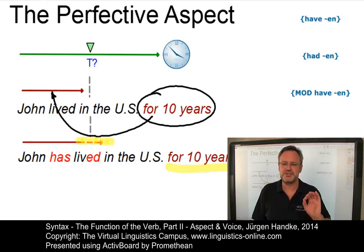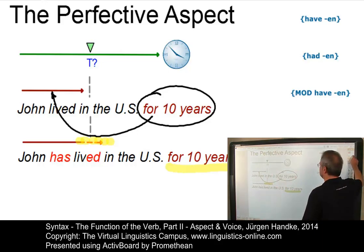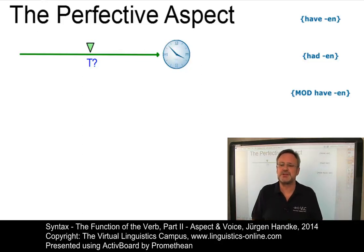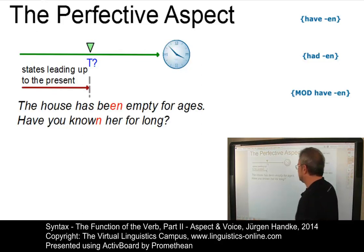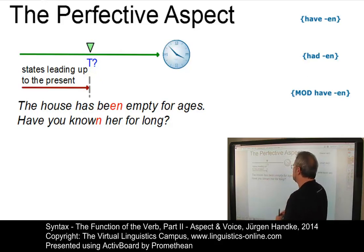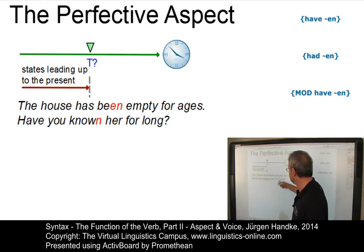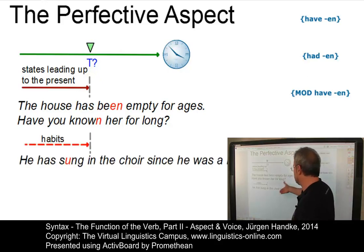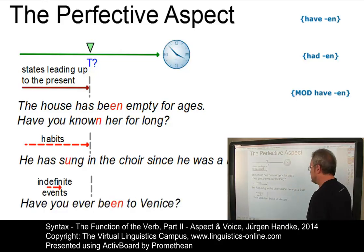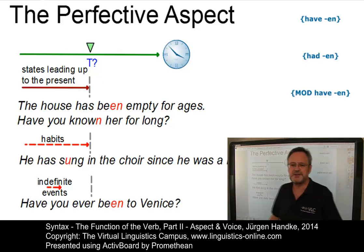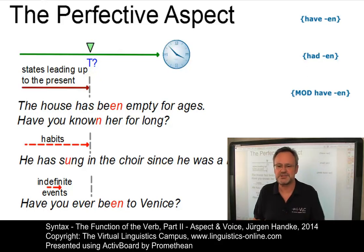Both examples indicate a state of affairs before the present moment. Let us look at further senses of the present perfective. These examples show what types can be distinguished. First, states leading up to the present time: The house has been empty for ages — it was empty some time ago and still is. Have you known her for long? Yes, I have. Second, habits: He has sung in the choir since he was a boy. Third, indefinite events: Have you ever been to Venice? Again, we have past time relevance.